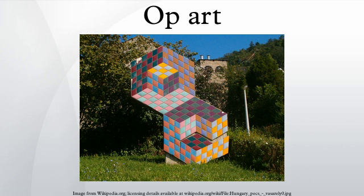Op art, also known as optical art, is a style of visual art that makes use of optical illusions. Op art works are abstract, with many of the better known pieces made in black and white. When the viewer looks at them, the impression is given of movement, hidden images, flashing and vibration, patterns, or alternatively, of swelling or warping.